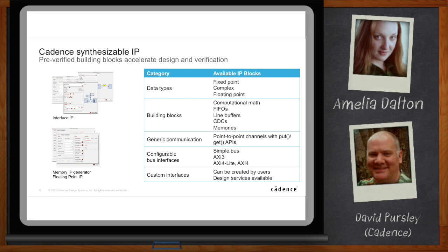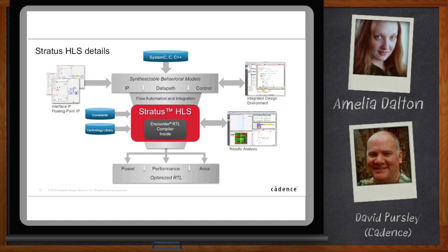Looking at a picture of Stratus HLS with all the bells and whistles, you have your SystemC, C, or C++ coming in at the top, going through the high-level synthesis tool — which has logic synthesis inside, looks at your technology library and constraints, and builds all the data path components needed to implement that description in RTL. You also have your interface IP, floating-point IP, and data types feeding in. You can analyze everything inside the IDE and map RTL results back to your original SystemC description.